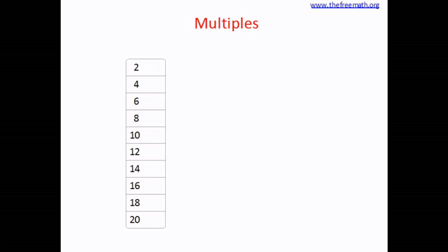To understand what multiples are, let's first consider the table of 2. If you look at all the numbers in the table of 2 like 2, 4, 6, 8, 10, all these numbers are called multiples of 2.